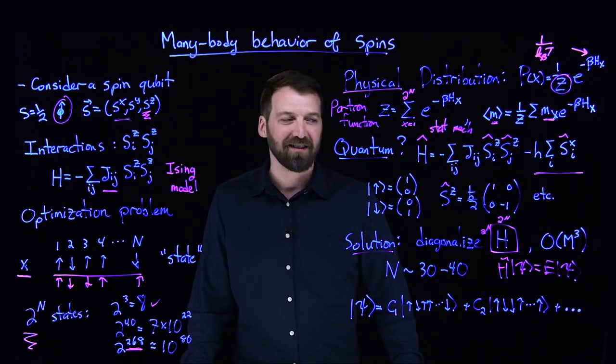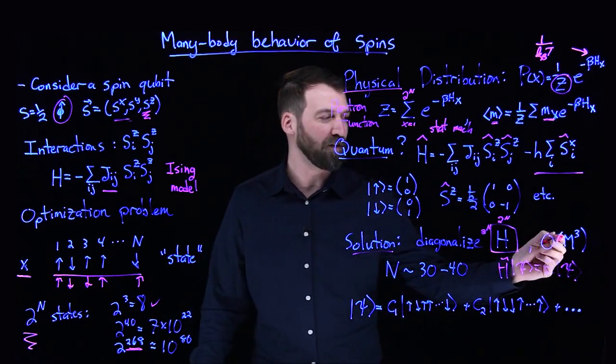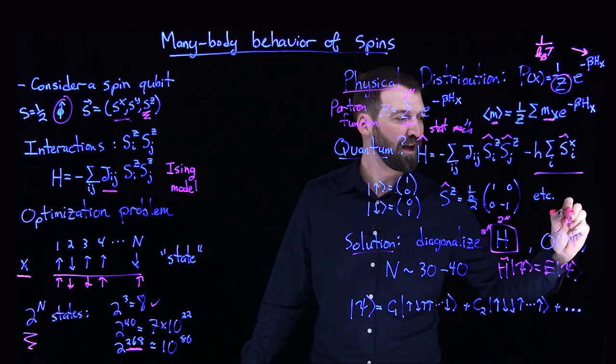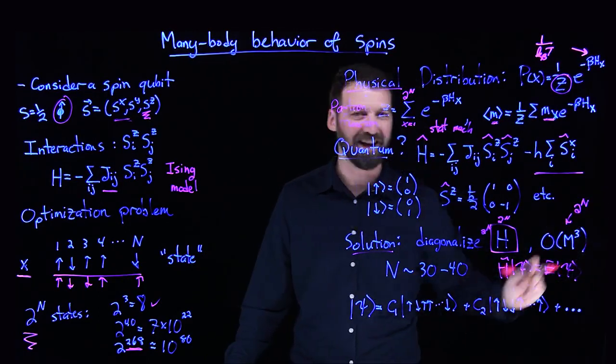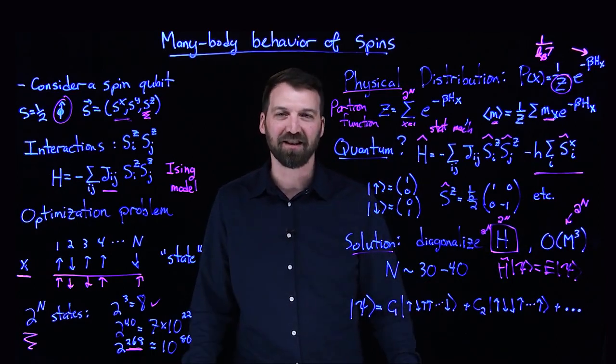Diagonalizing a matrix numerically for a problem like this is known to cost of order m^3, where m is the size of the Hilbert space, 2^n. You can see how this diagonalization procedure escalates very quickly.